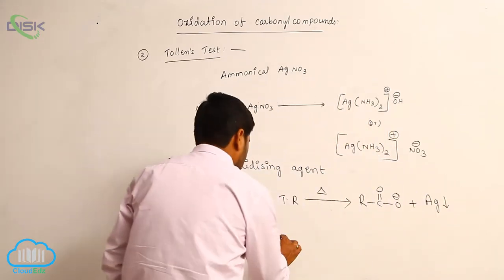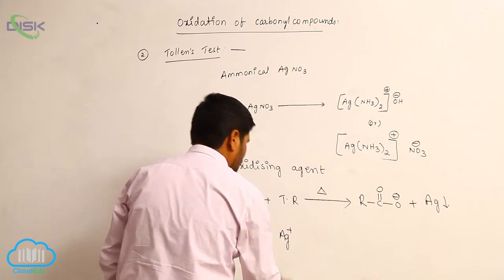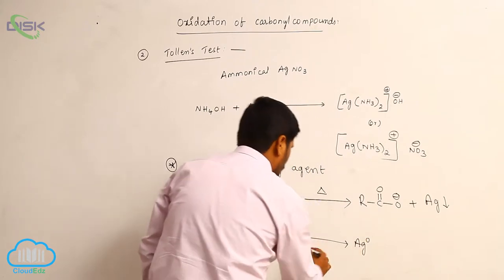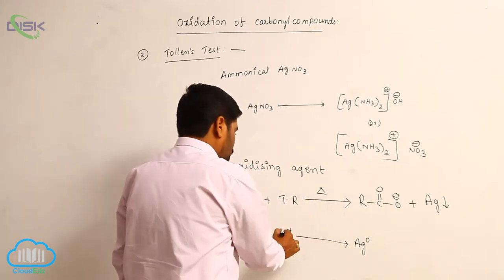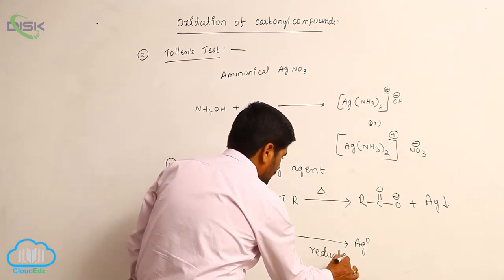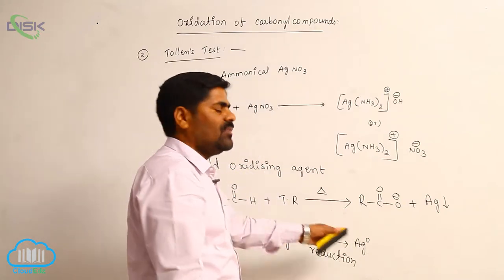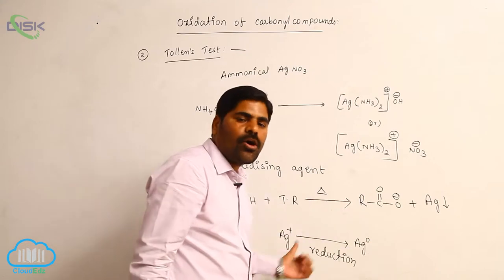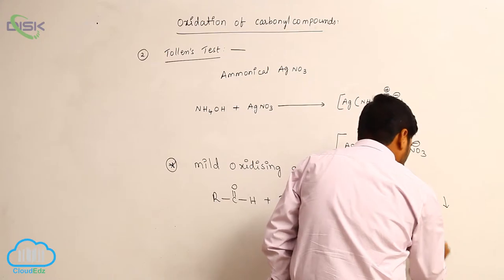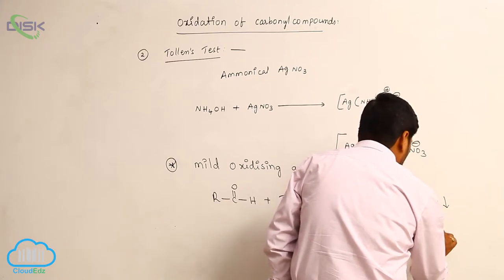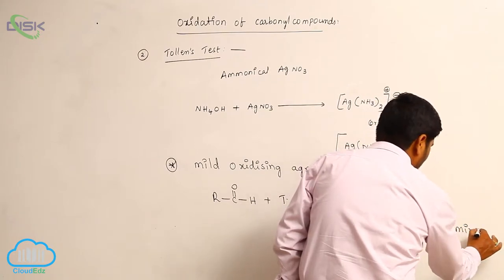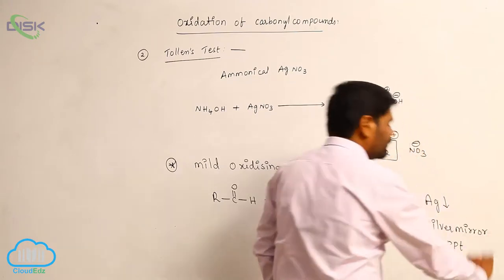In Tollens reagent, the oxidation state of silver is +1. It converts to zero — that is, Ag⁺ to Ag⁰ — so this is a reduction process. Therefore, silver acts as an oxidizing agent, and a silver mirror precipitate is formed.